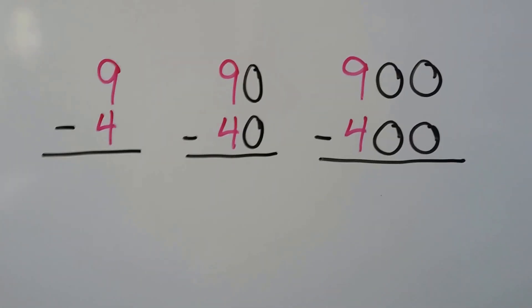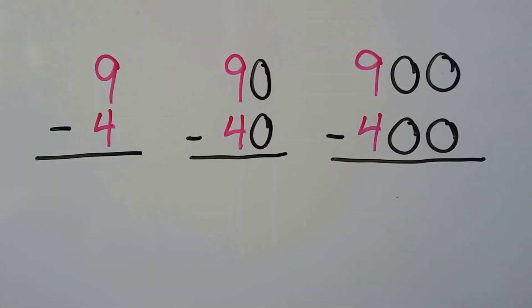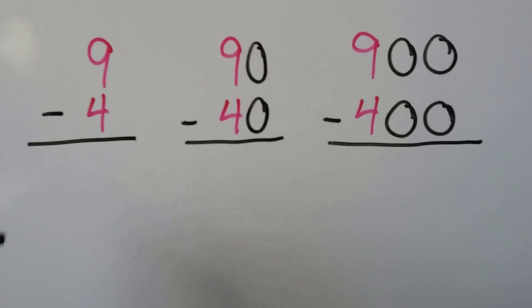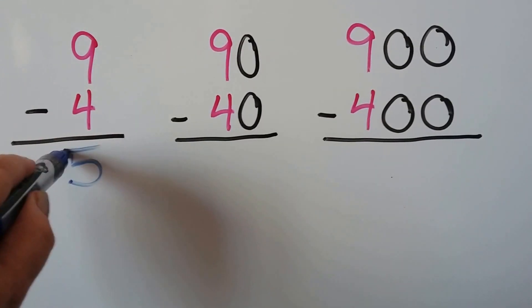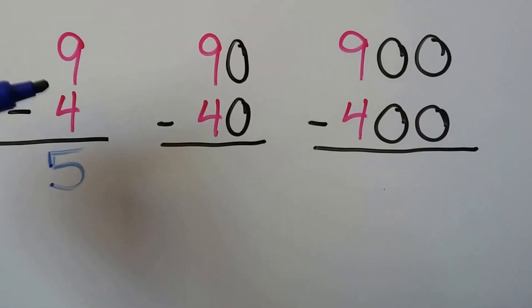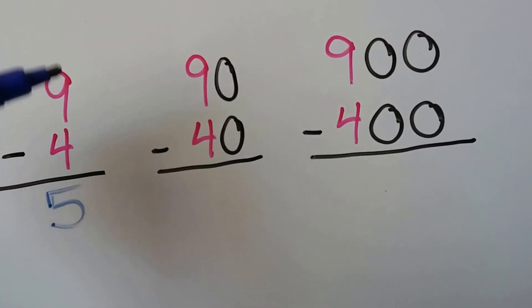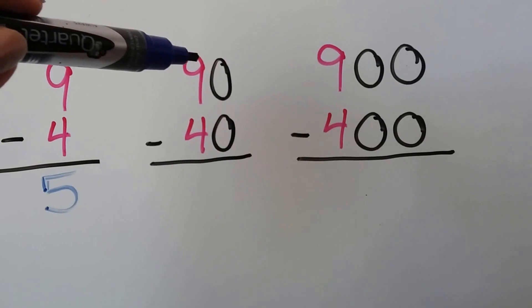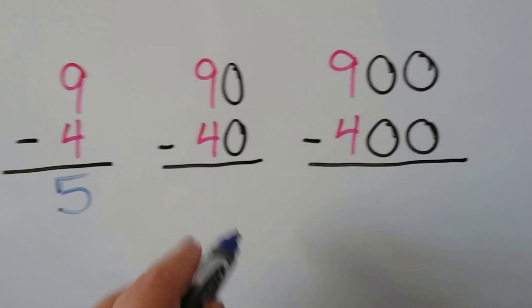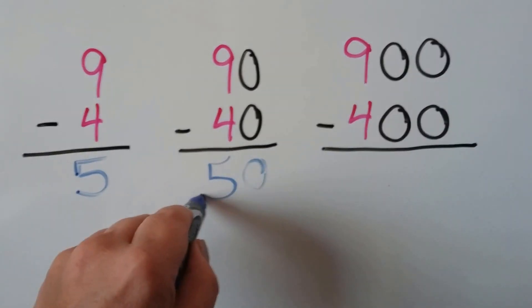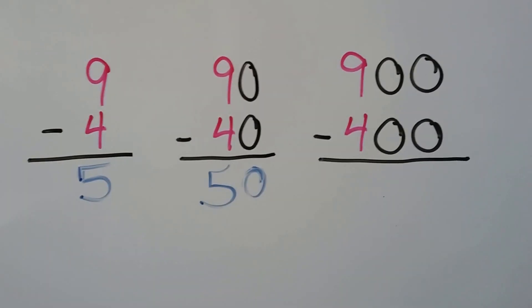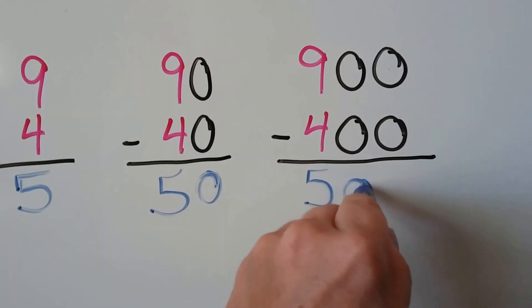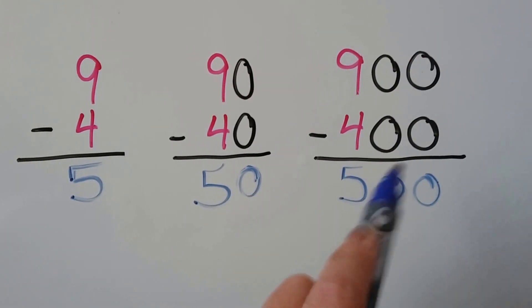Let's try it again with nine minus four. We count back four from nine — nine, eight, seven, six, five — or count up from four to nine. Either way the answer is five. So ninety minus forty: we have zeros in the ones place and nine minus four is five, giving us fifty. And nine hundred minus four hundred: zeros in both the tens and ones place, so we get five hundred. No zeros, one zero, two zeros — there's the pattern!